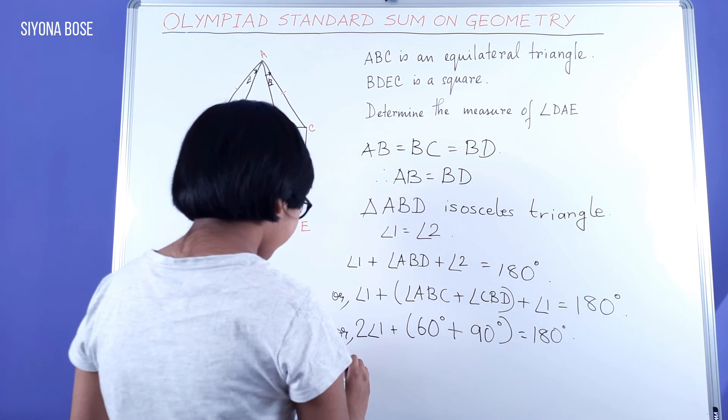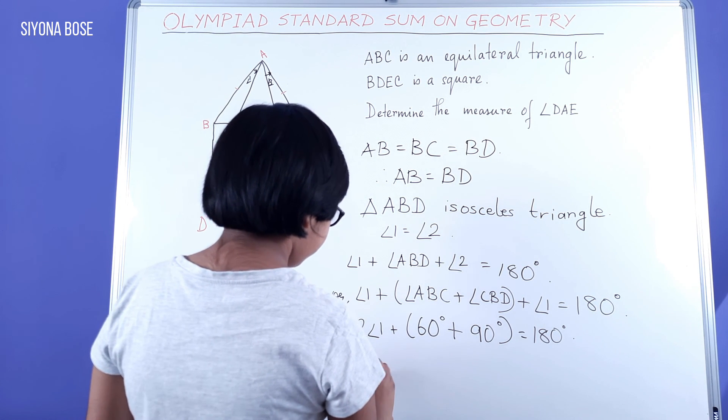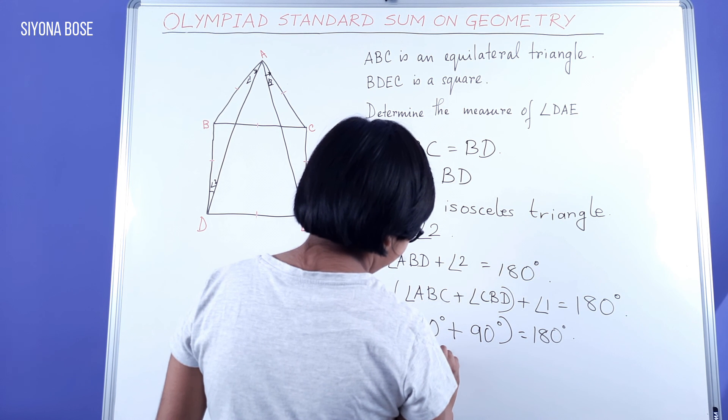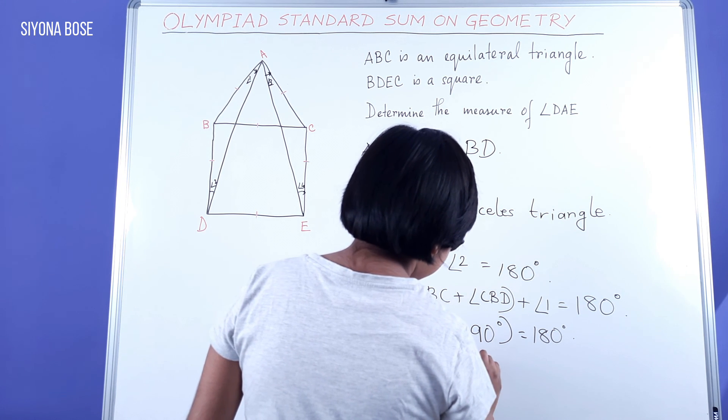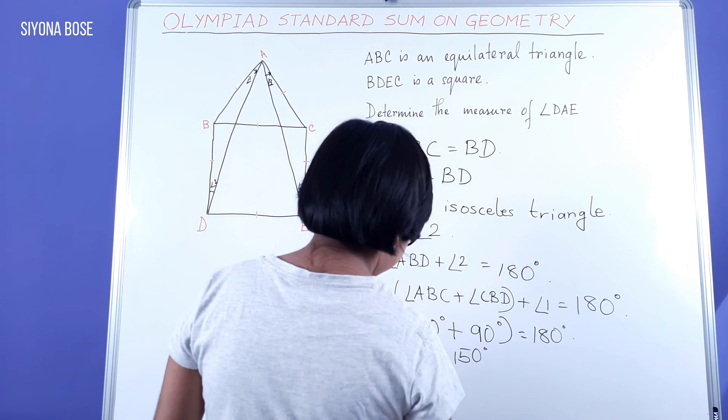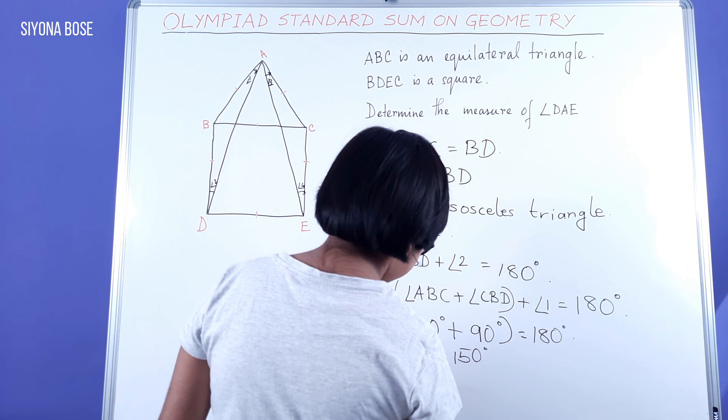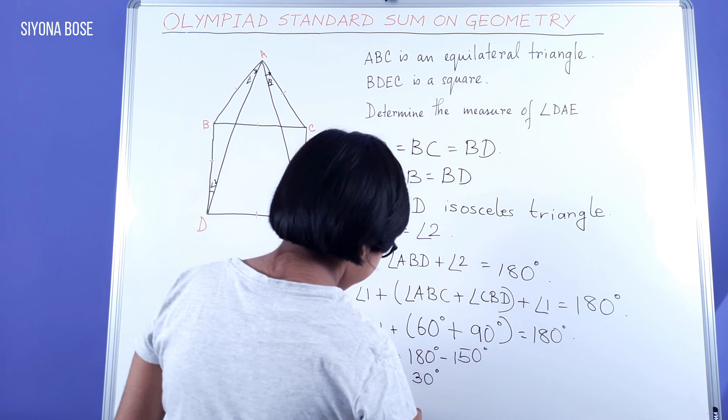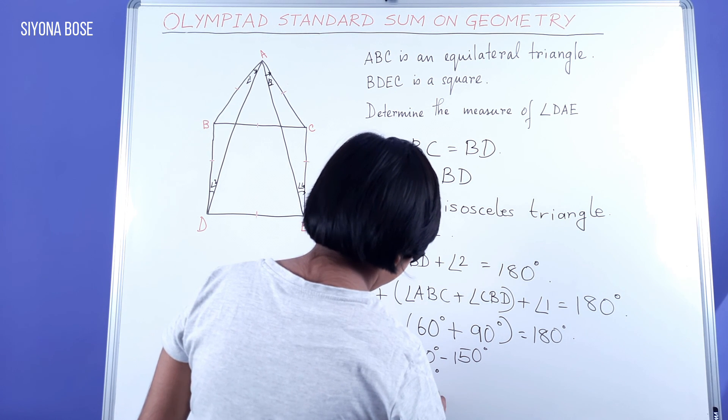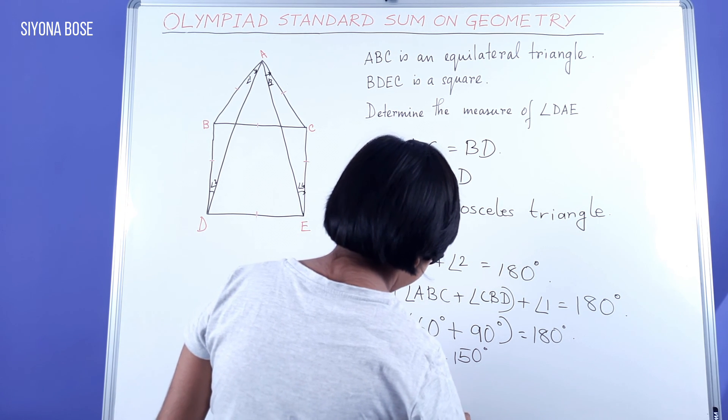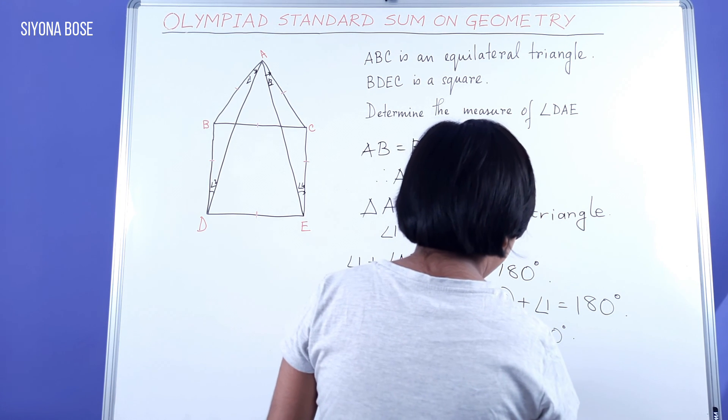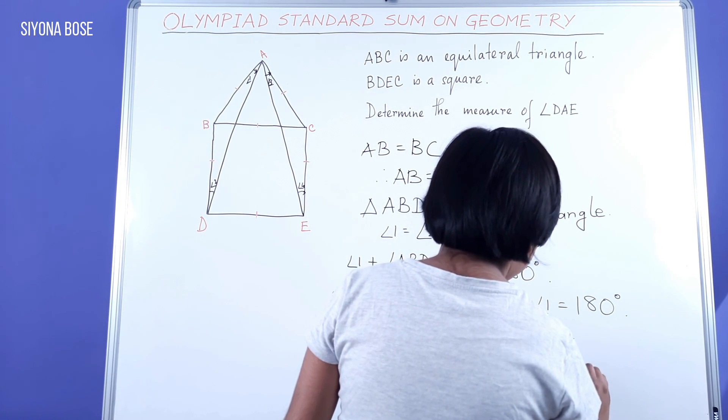Or, 2 times angle 1 equal to 180 degrees minus 150 degrees equal to 30 degrees. Or, angle 1 equal to 30 degrees by 2 equal to 15 degrees. Therefore, angle 1 equal to 15 degrees.